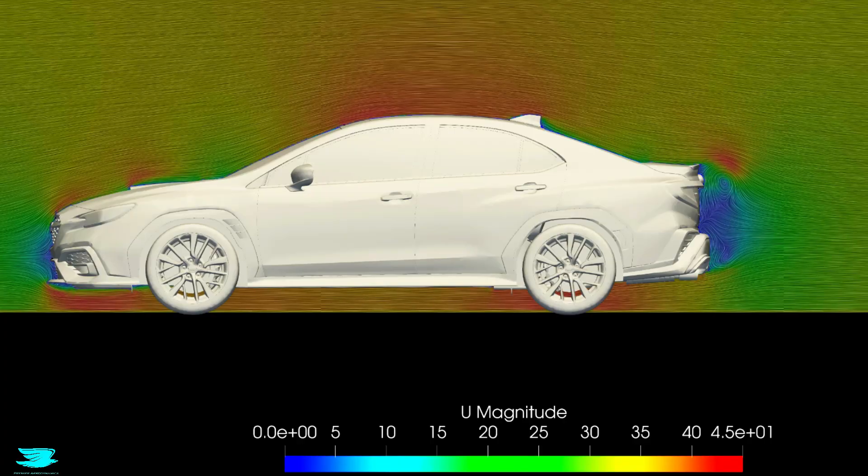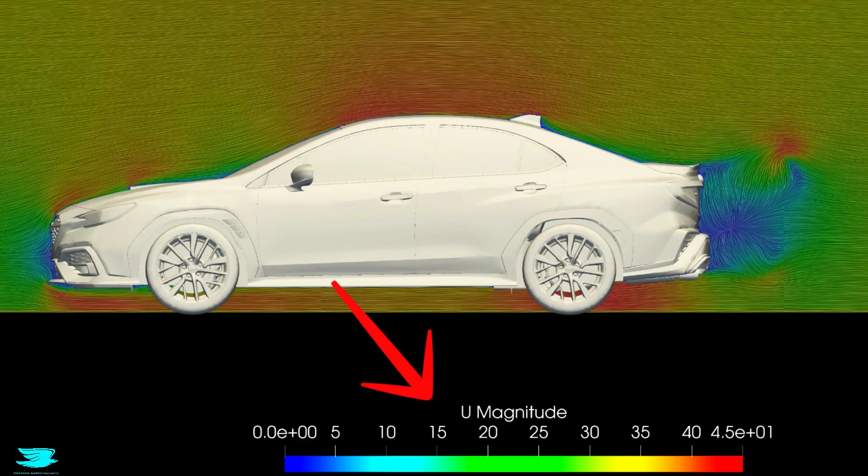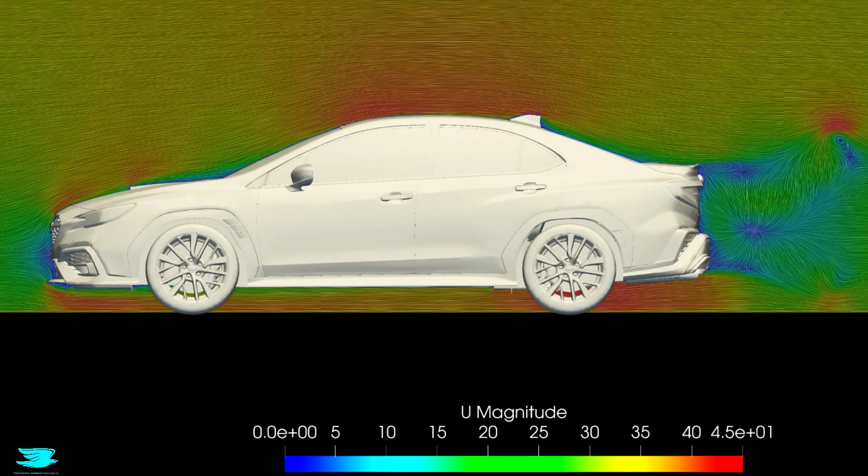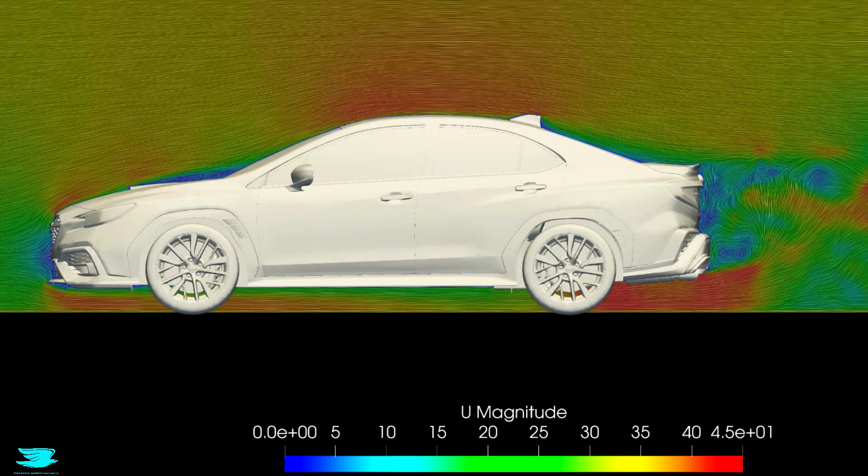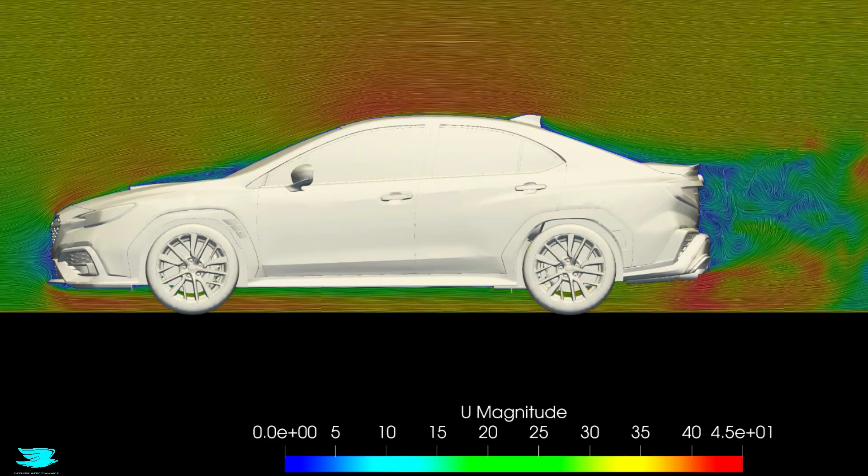This plane is slicing through the center of the car and is colored in the speed in meters per second. From this zoomed out view, there are a few things that stand out, but the most unusual is the aerodynamics of the hood scoop. Zooming in, we can see that even as we approach the scoop, a thick boundary layer forms.